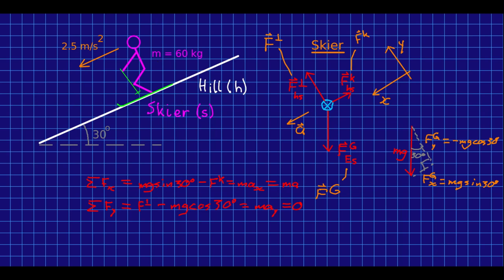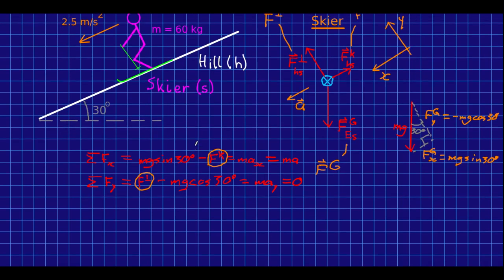And now we can see my unknowns are just fk, which is the thing I'm looking for, and f perpendicular. I don't care about f perpendicular, but notice I could find it out of this equation, it would just be mg cos theta.